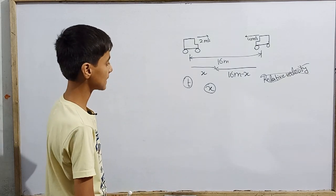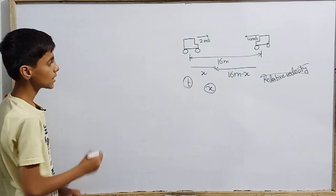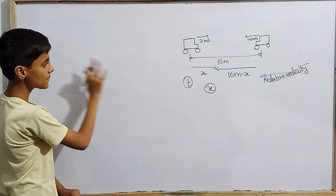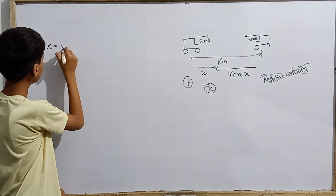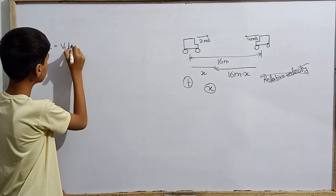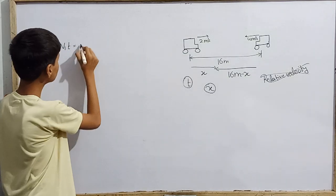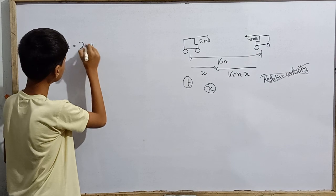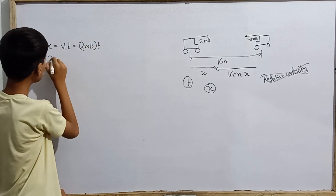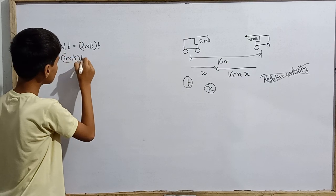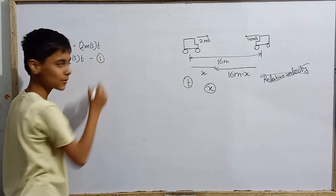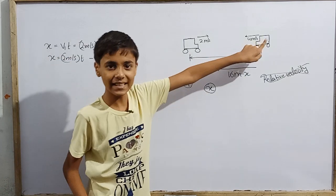So what do we do? The first car has traveled in T time, so let's write: x equals V for first into T, that is 2 meters per second into time T. So x equals 2 meters per second into T. We have the first equation.